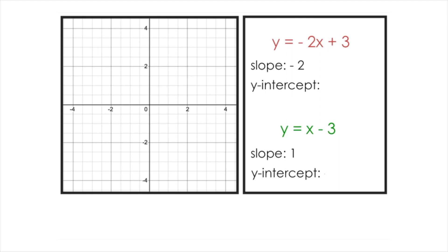Right away, you can see that these slopes are not equal. In slope-intercept form, it's also very easy to pick out the y-intercept. This first line has a y-intercept of 3, and the second line has a y-intercept of negative 3. So what I'm going to do next is plot both of these lines on this grid to get a visual representation of what we're dealing with here.